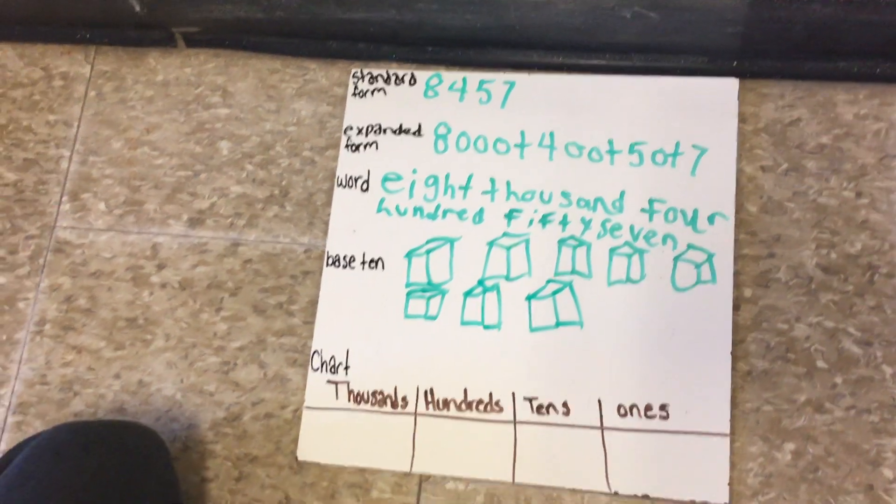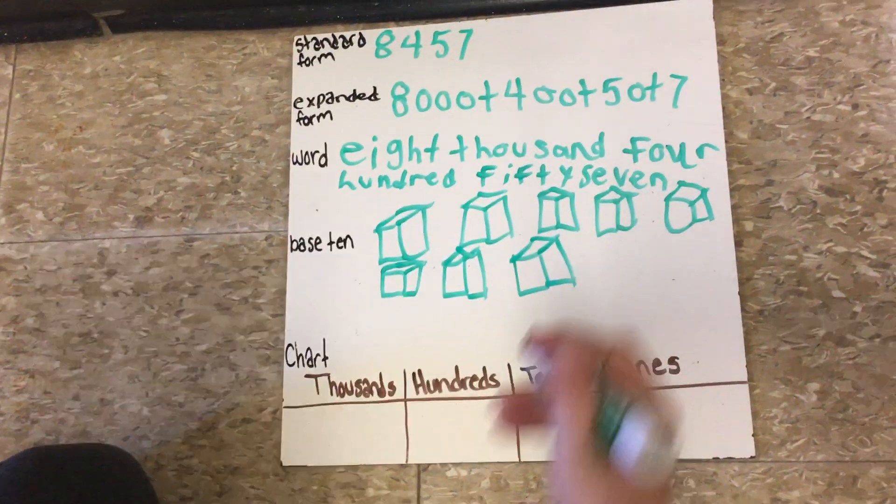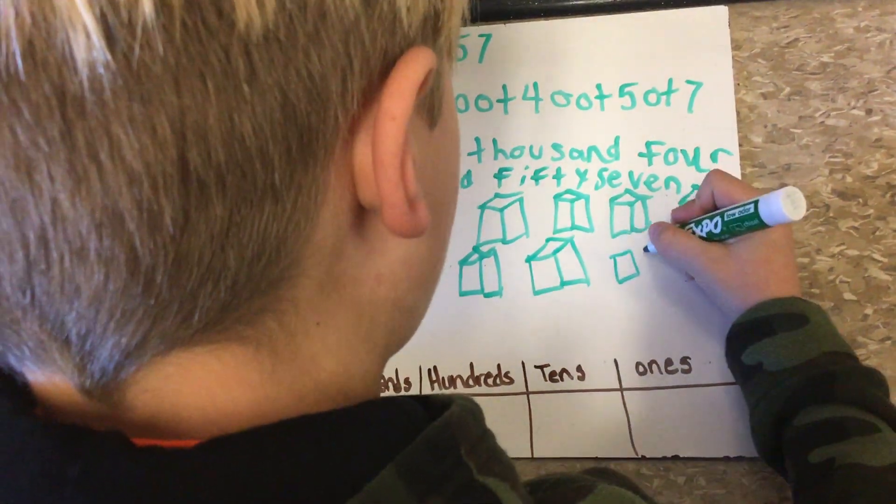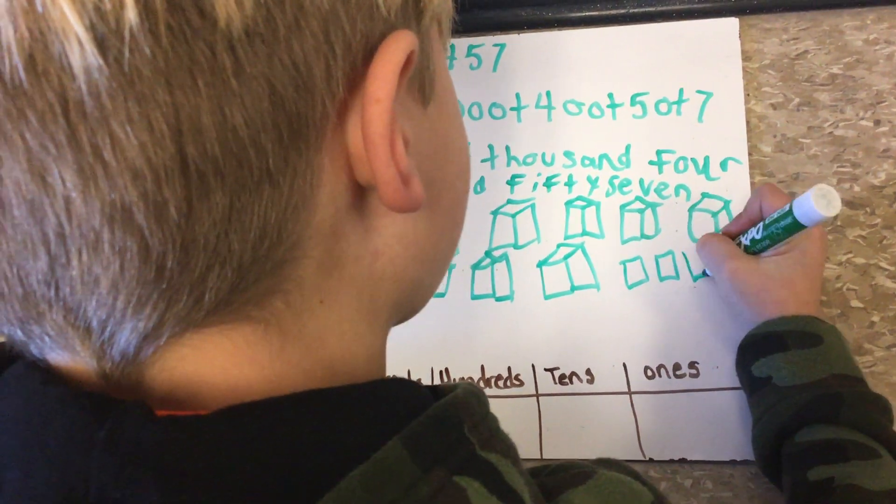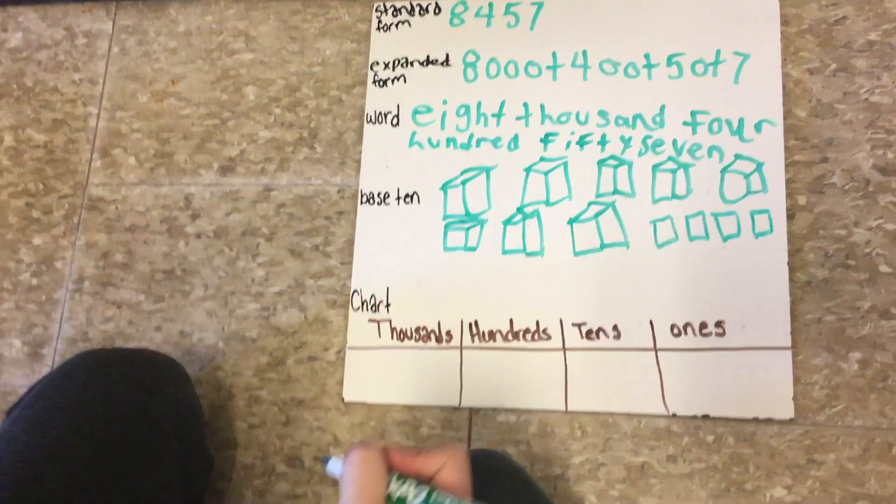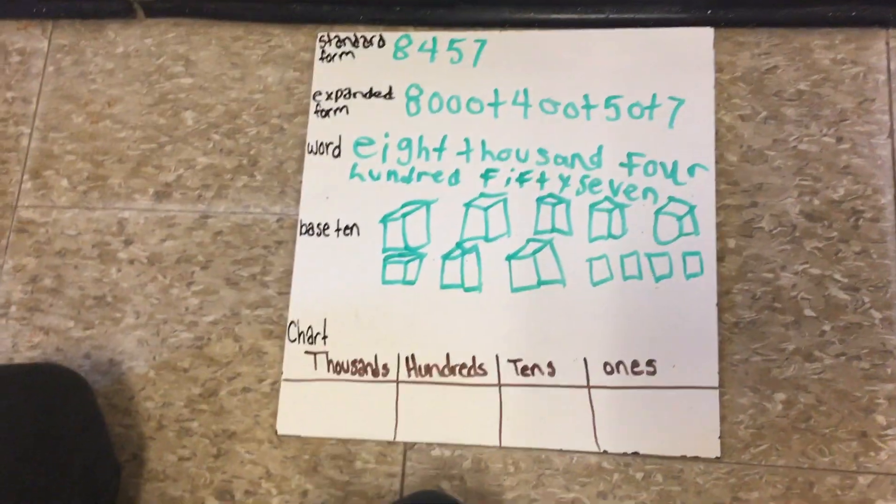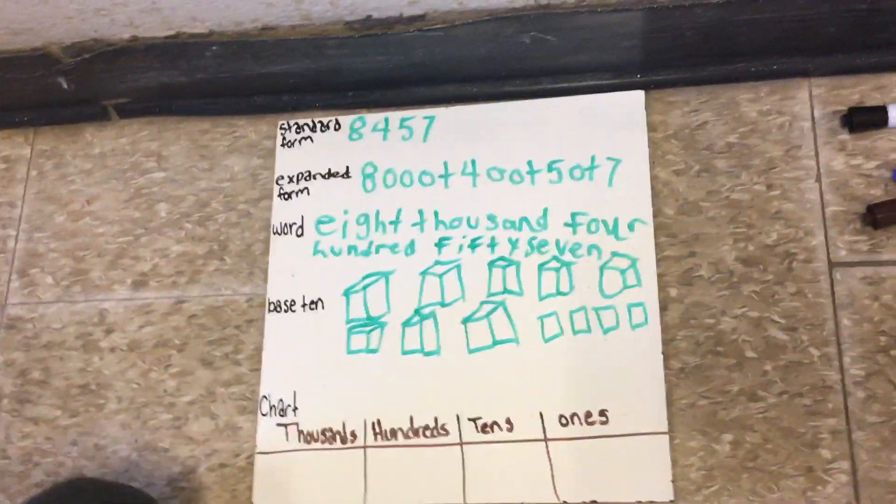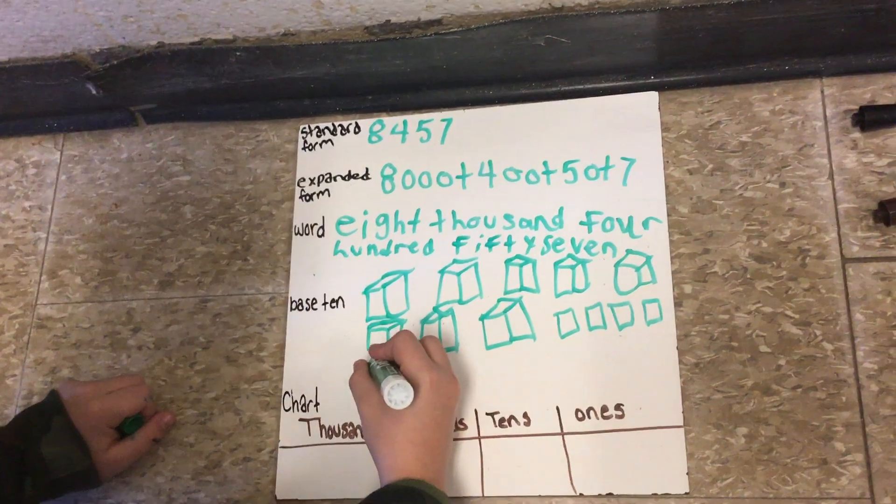Then you draw the 400 blocks, then the 5 ten blocks and the 7 one blocks.